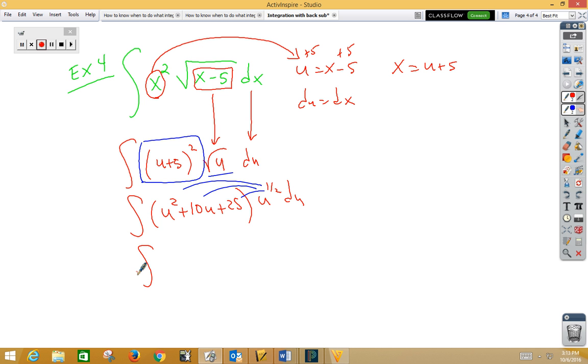So if I distribute that, I'm going to get u to the 5 halves plus 10u to the 3 halves plus 25u to the 1 half du.